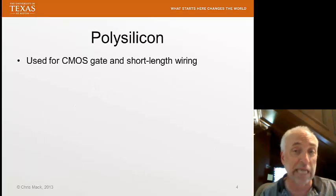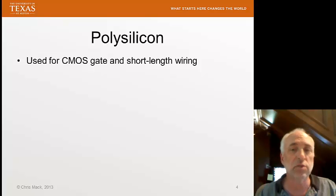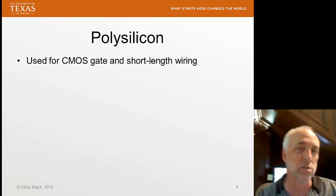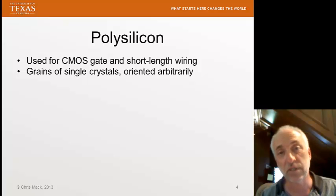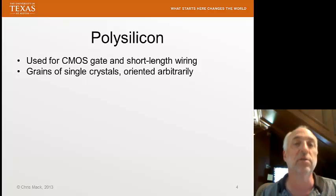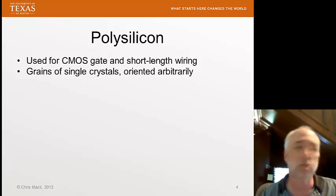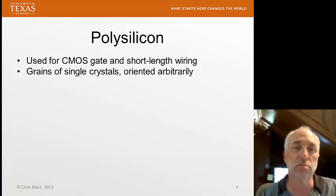Polysilicon is used for the CMOS gate and for connecting gates. If you have close transistors, you can make short connections between gates using polysilicon. It's not the world's best wire — its conductivity is not high enough to carry a signal across a chip — but for very short distances, polysilicon can serve as a short-length wire. Polysilicon is short for polycrystalline silicon, made up of grains of single crystal material. Amorphous silicon has no crystal structure, single crystal silicon is one giant crystal, and polycrystalline silicon is a collection of grains each with a single crystal, with arbitrary grain orientations and varying grain sizes.